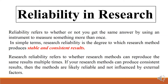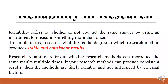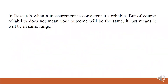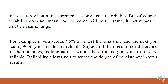Research reliability refers to whether research methods can reproduce the same results multiple times. If your research methods can produce consistent results, then the methods are likely to measure the same thing. When a measurement is consistent, it is reliable. But reliability does not mean your outcome will be exactly the same — it just means it will be in the same range.